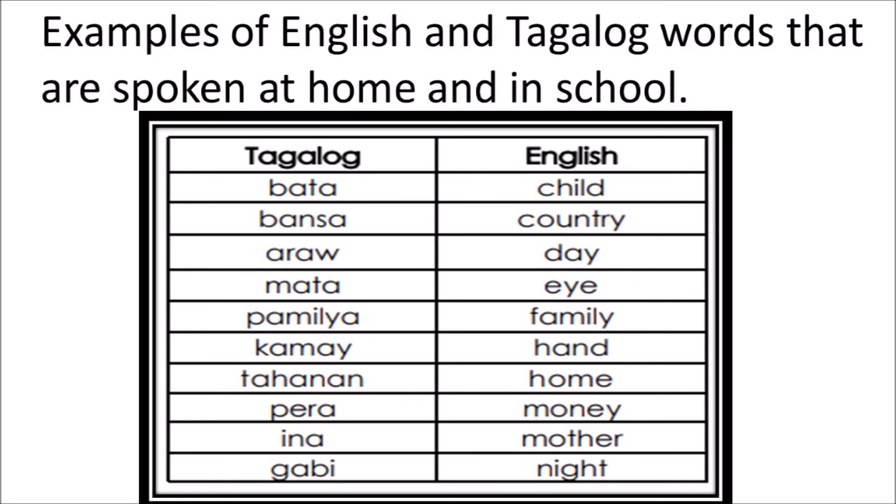Now, here are examples of English and Tagalog words spoken at home and in school. Tagalog: Bata. In English: Child. Bansa — Country. Araw — Day. Mata — Eye. Pamilya — Family. Kamay — Hand.